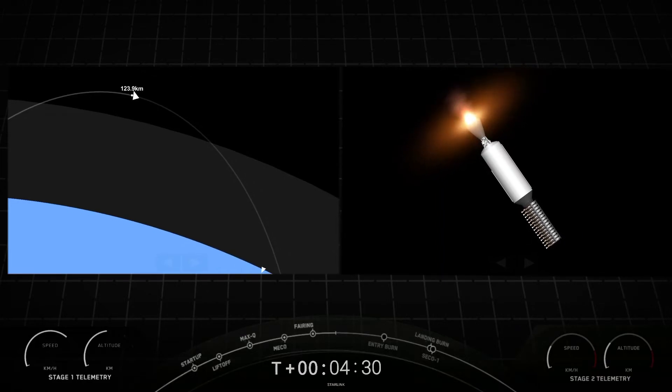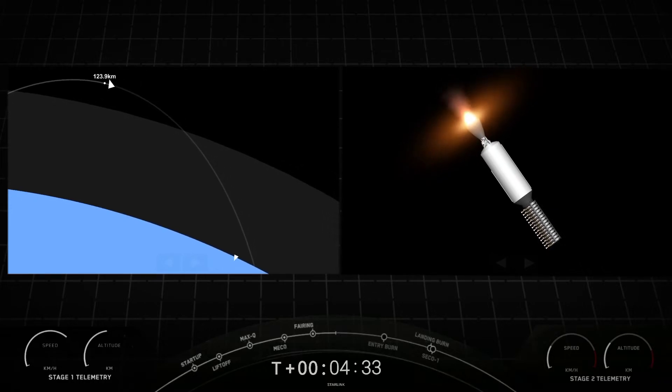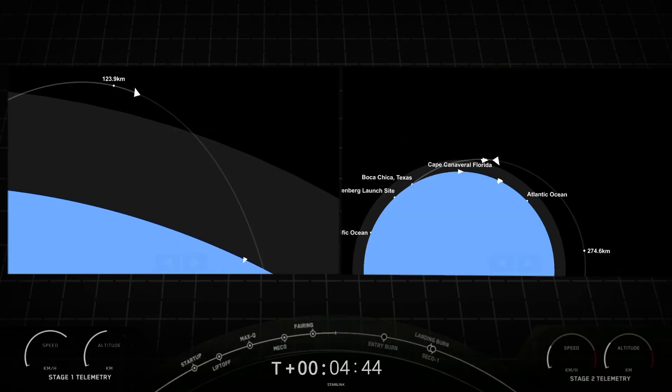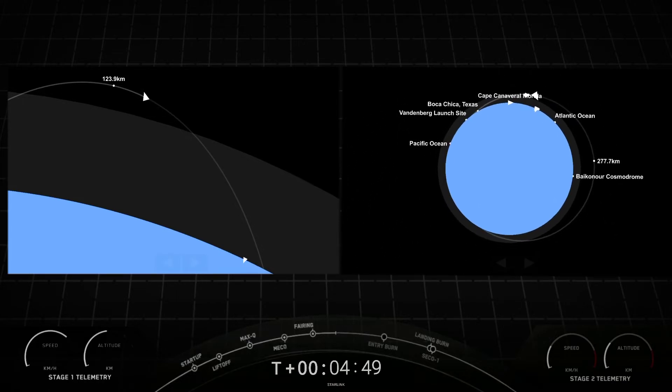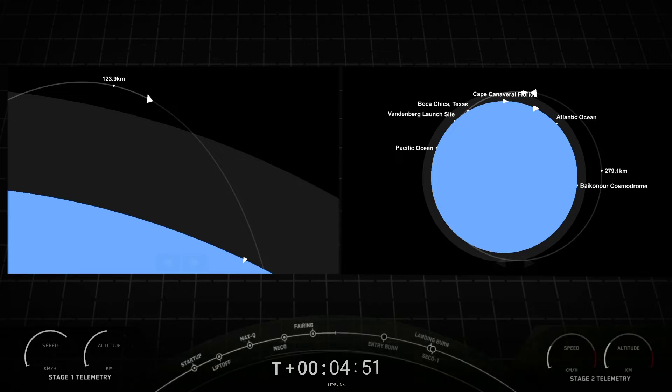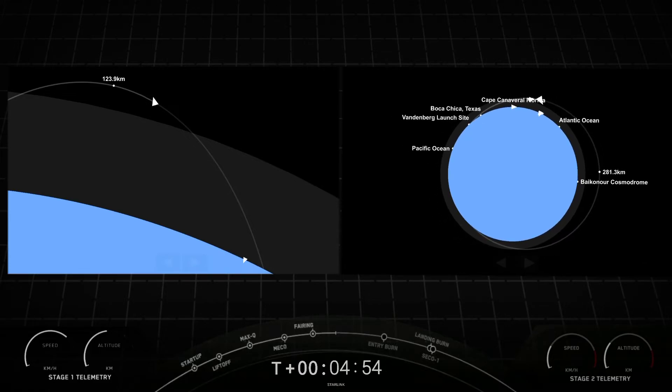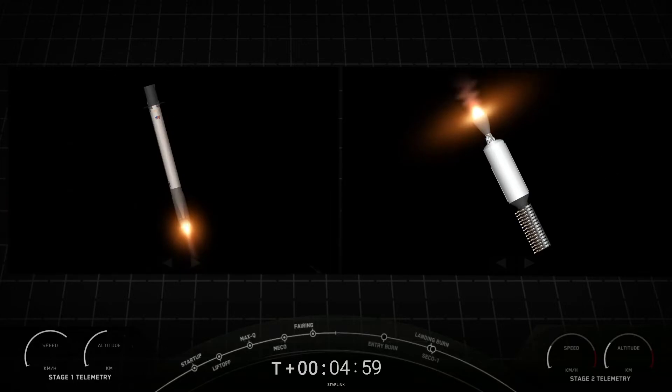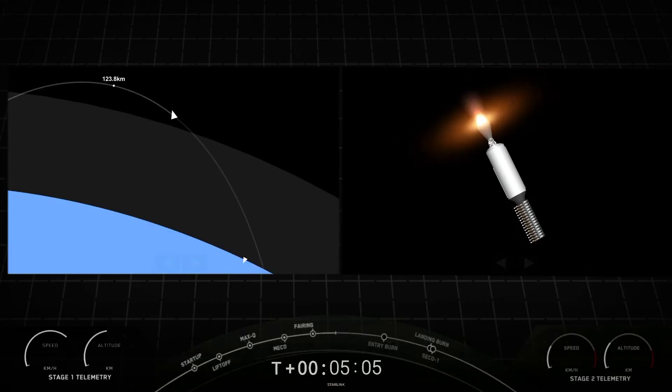And the drone ship, just for size, is about equivalent to the size of a football field, so it's pretty large. Both vehicles are following nominal trajectories. We're just a couple minutes away from the entry burn starting up on the first stage. First stage also has four landing legs made of carbon fiber aluminum honeycomb. And they're placed symmetrically around the Falcon 9 vehicle and stowed at the base of the vehicle. They just deploy just right before the vehicle touches down.